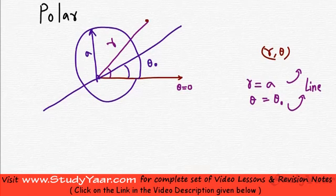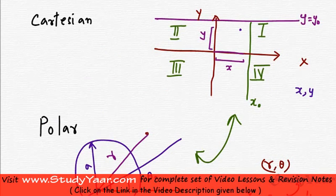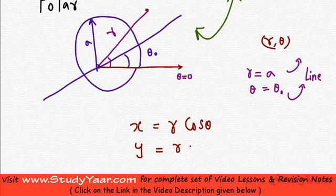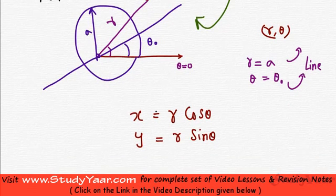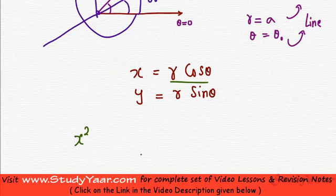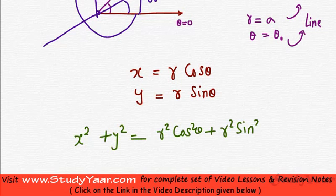We can interchange between these two coordinate systems using the equations x equal to r cosθ and y equal to r sinθ. So if you know r and θ, you essentially know your x and y. And if you know x and y, you can find r and θ: squaring both equations gives x² equal to r² cos²θ and y² equal to r² sin²θ. Adding them and taking r² common gives cos²θ plus sin²θ, which equals 1, so x² plus y² equal to r².